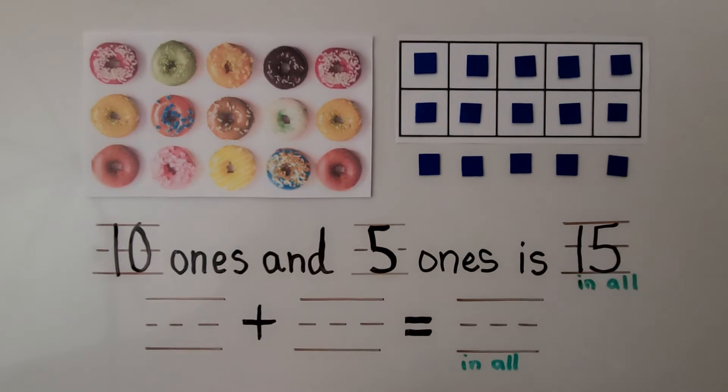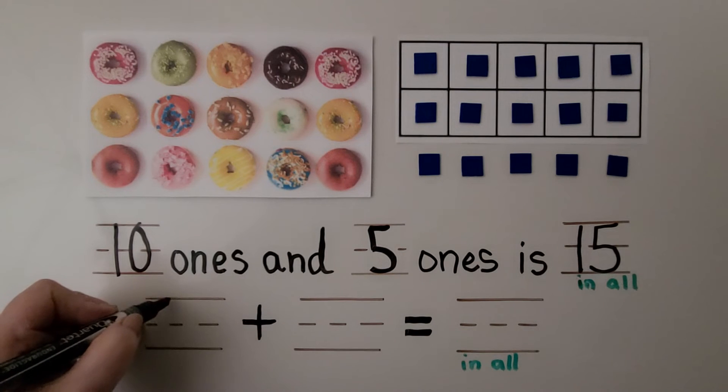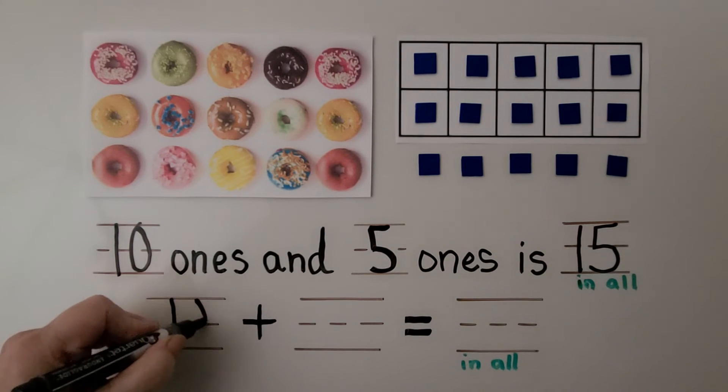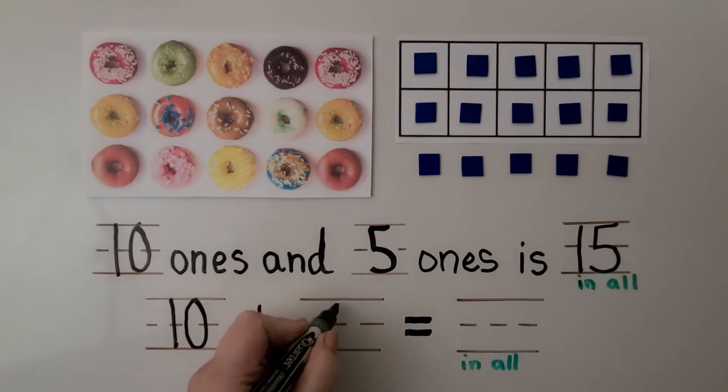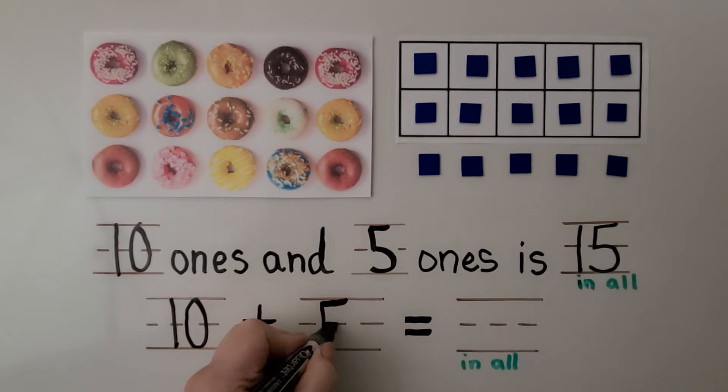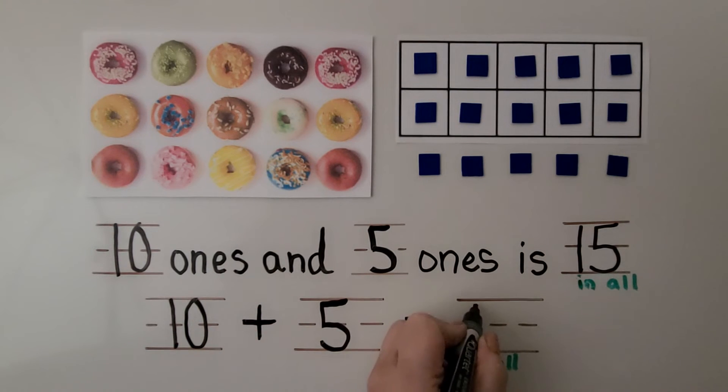10 ones and 5 ones is 15 in all. We can write an addition sentence. 10 plus 5 is equal to 15.